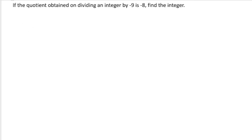If the quotient obtained on dividing an integer by minus 9 is minus 8, find the integer. We don't know this integer, we need to find it out. So in order to find it, we would